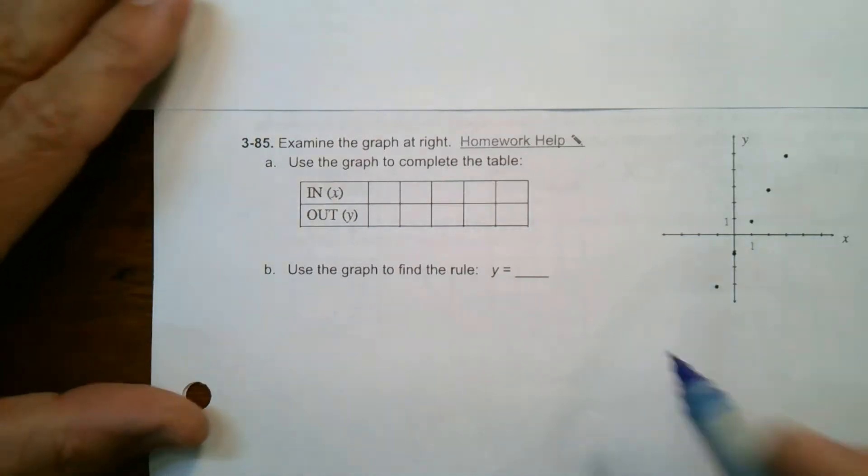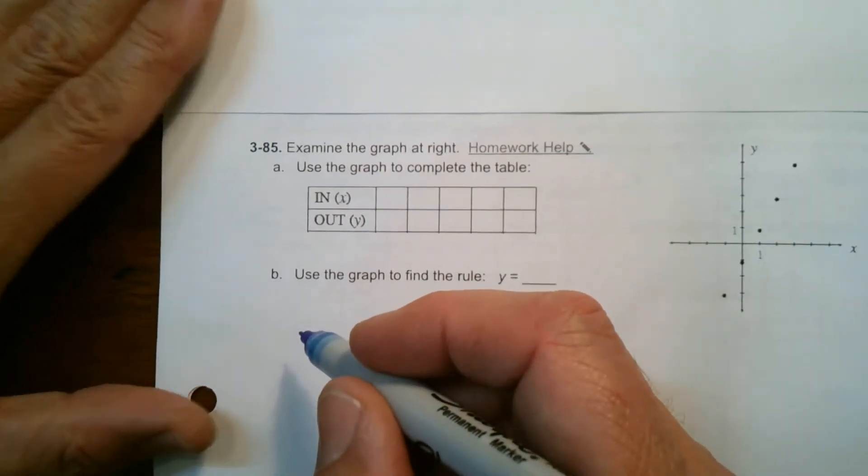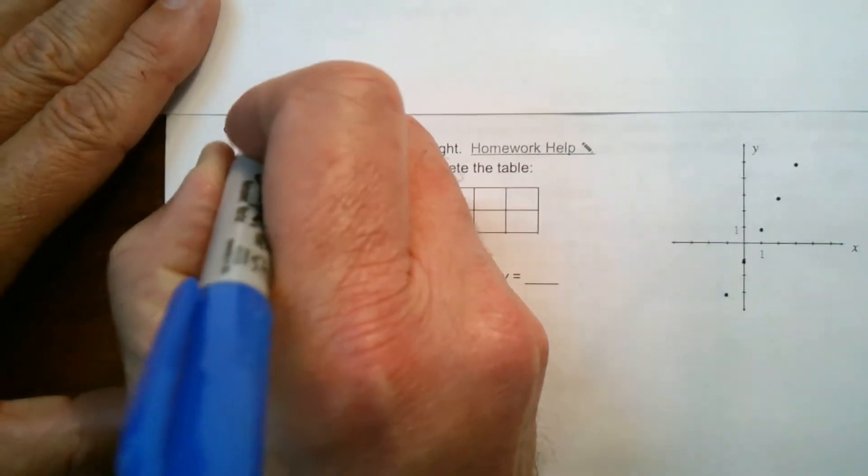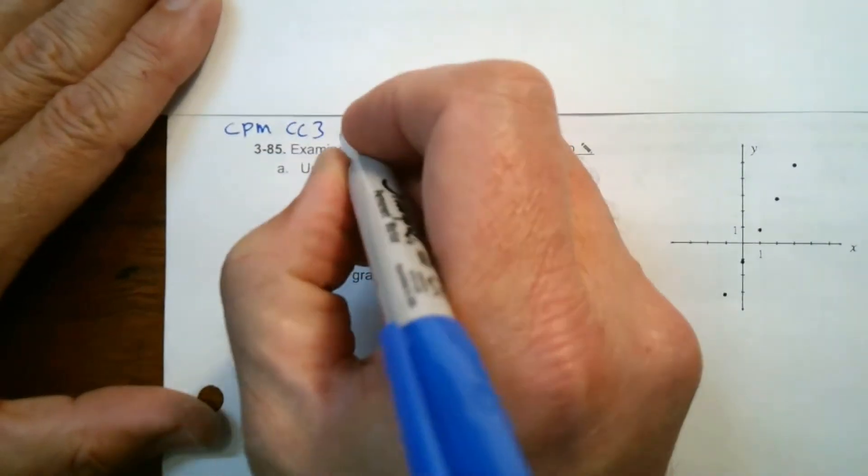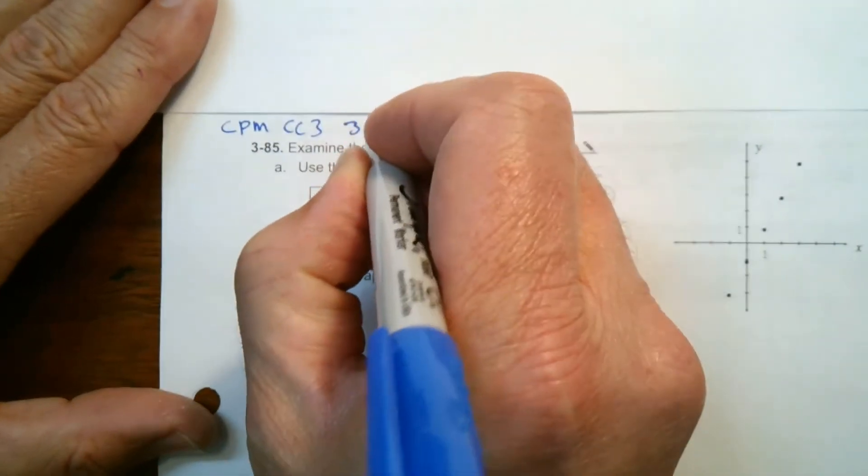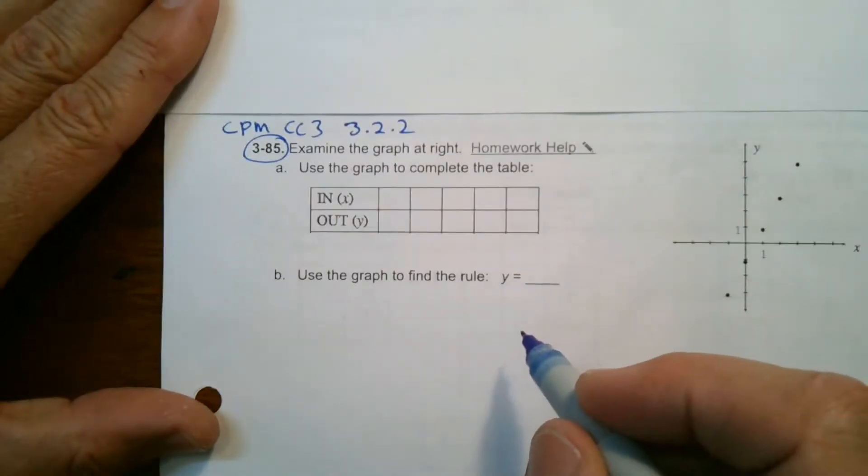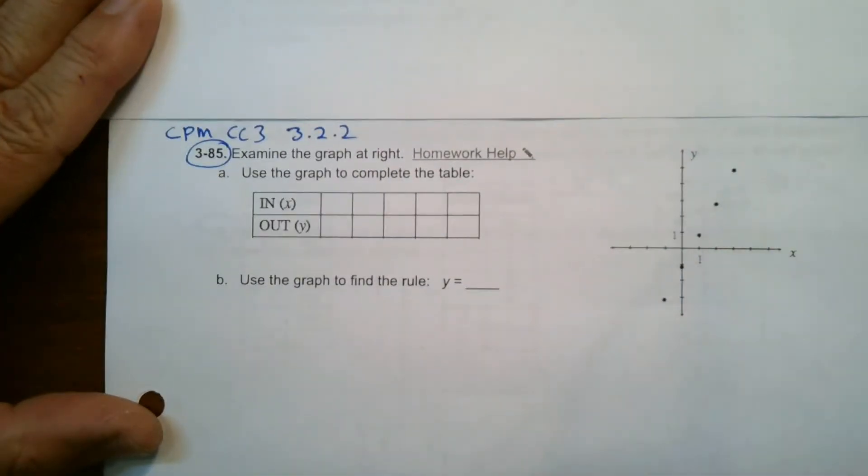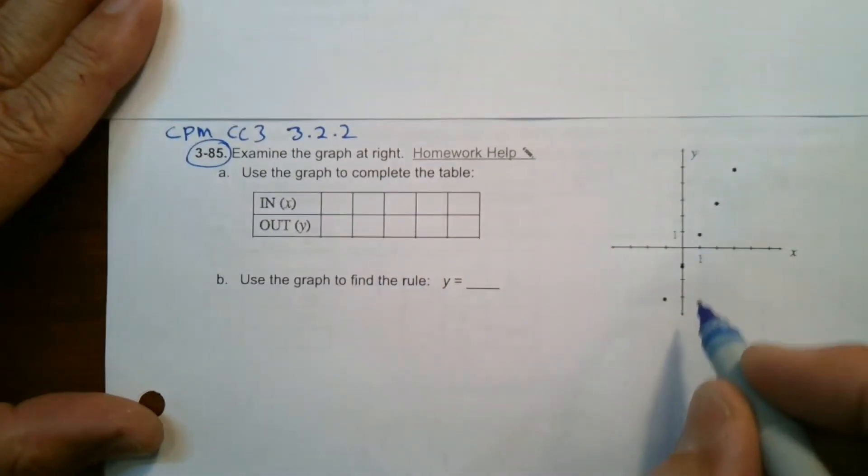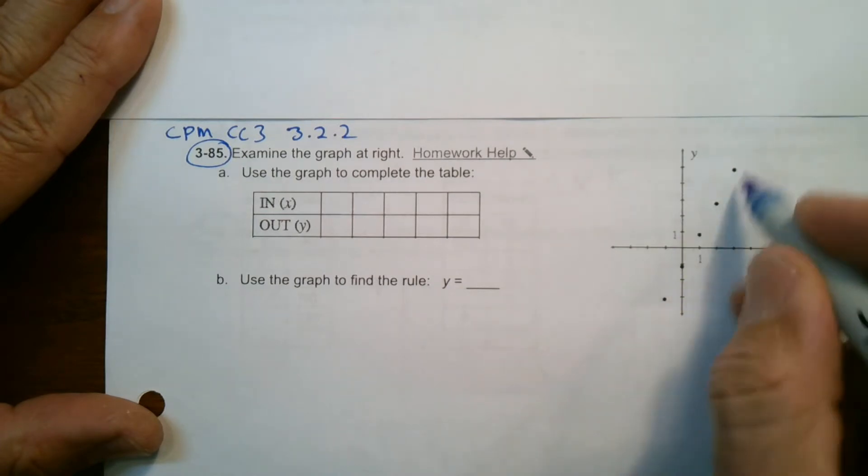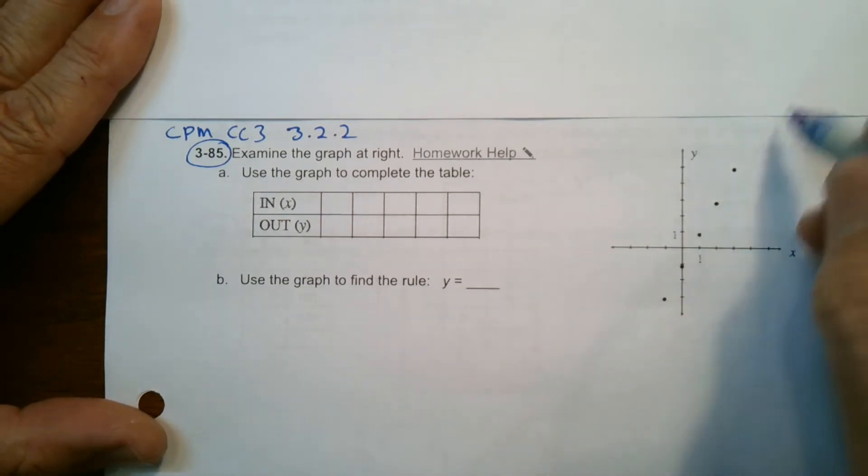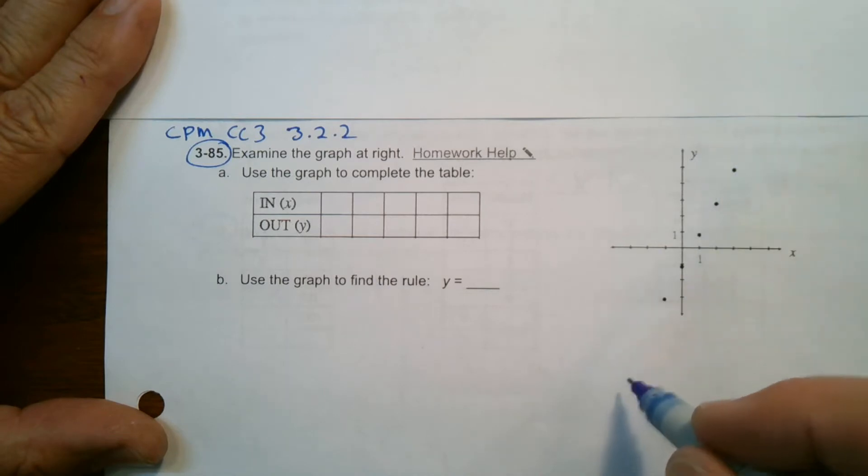So this is a problem from CPM, course 3, CC3, section 3.2.2, number 385. So here's my graph. My graph can give me those values that I need to complete my table. All of these represent points on this pattern or this line. If I were to connect the dots, that would be a line.